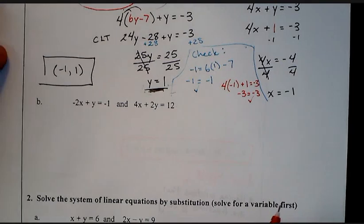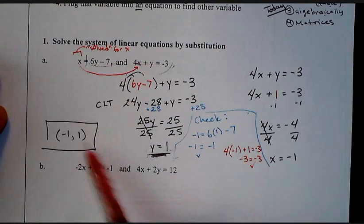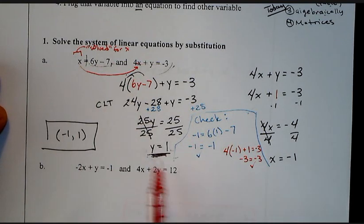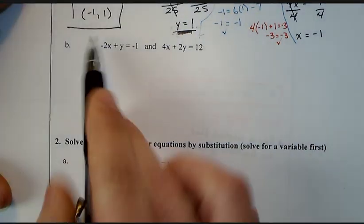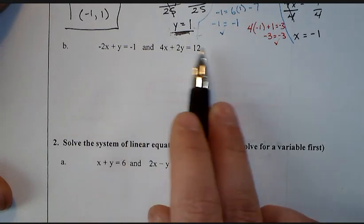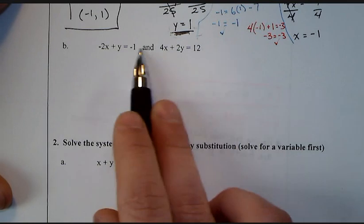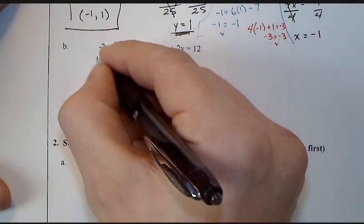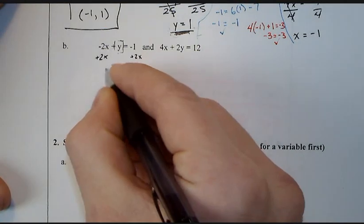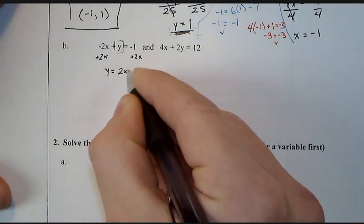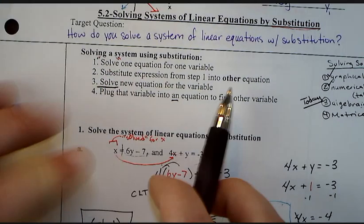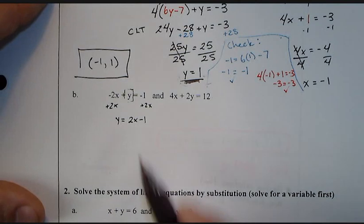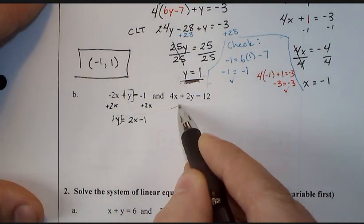Letter B. Now, notice what's different between A and B. A, they had x equals something all laid out for us. Not the case in letter B. But that's okay. The process is to look inside and say, do I have any x's or y's that are isolated already, that are by themselves? And I look at this and I say, ding, ding, ding, right there. So I know that I'm going to try to isolate y first. And I do that by adding 2x. So now it becomes y equals 2x minus 1. That was our first step. Solve, in quotes, one equation for one variable.